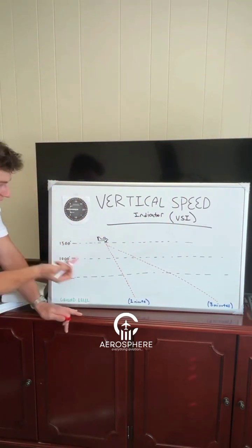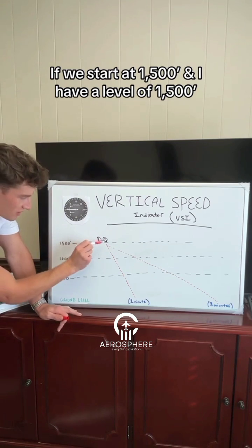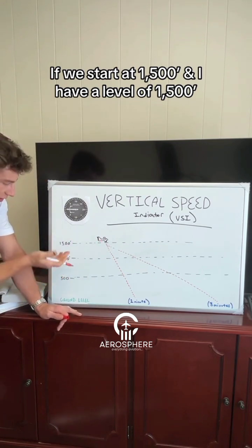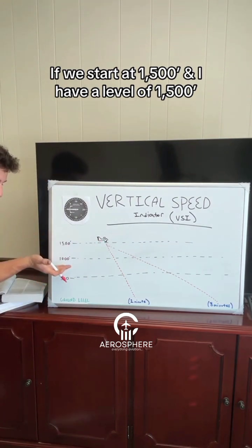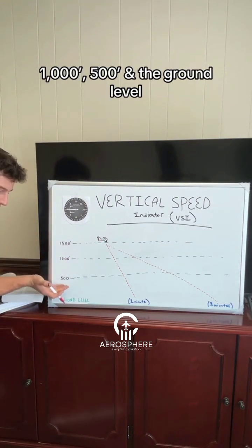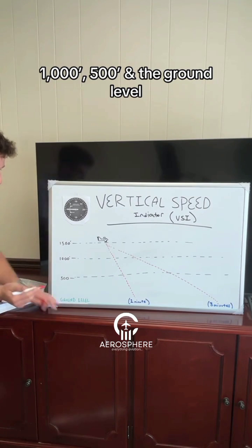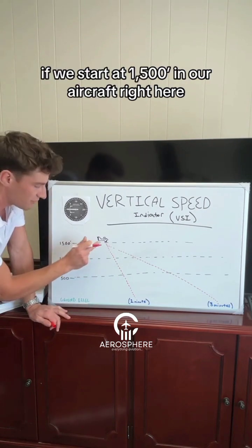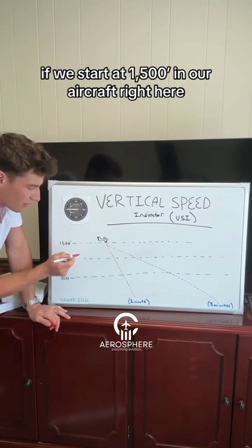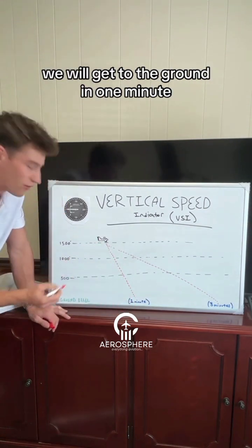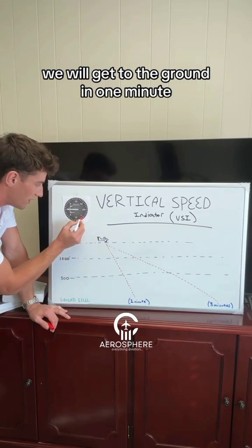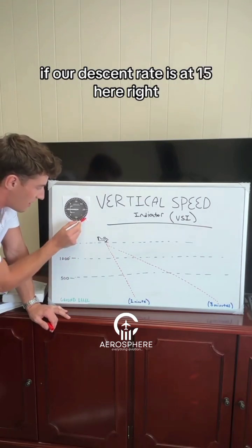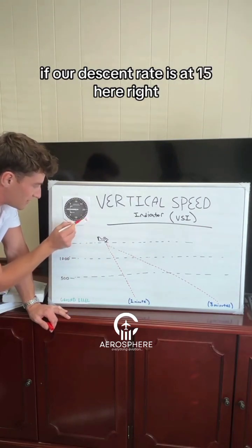Here's our instrument. If we start at 1,500 feet and we have a ground level of 1,500 feet, if we start at 1,500 in our aircraft right here, we will get to the ground in one minute if our descent rate is at 1,500 feet per minute.